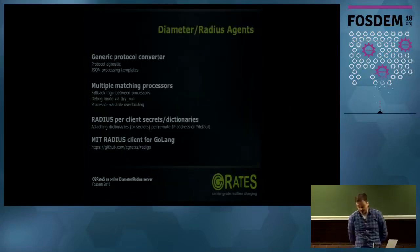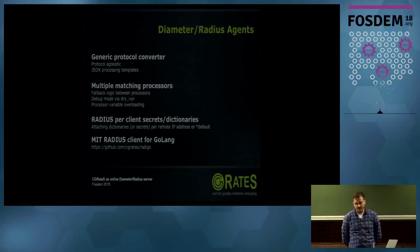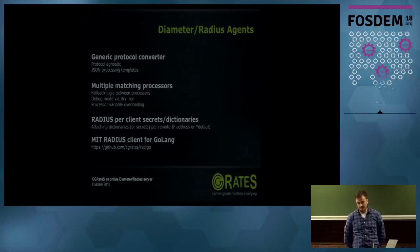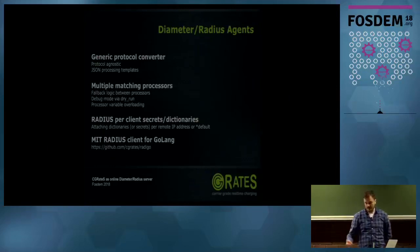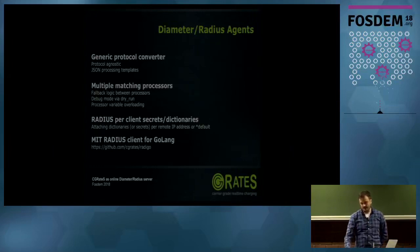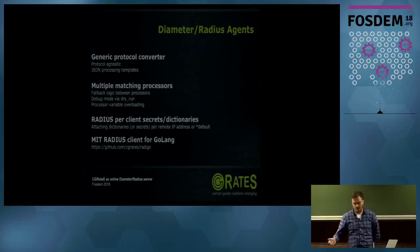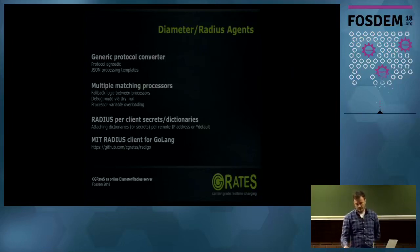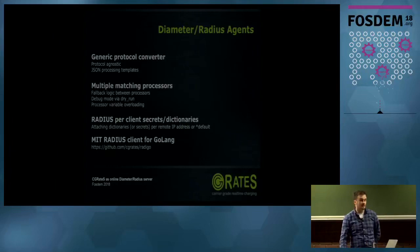Regarding Diameter and Radius agents, we have a generic protocol converter that is protocol agnostic. You can define all its logic in JSON processing templates. You can have multiple matching processors simultaneously, with fallback between them, debug your templates, and do processor variable overloading. For Radius you can also define per-client secrets or dictionaries. We implemented that in our own library — we also maintain a Radius library in Go, which we encourage you to use.